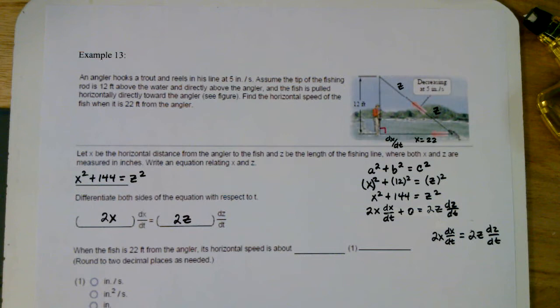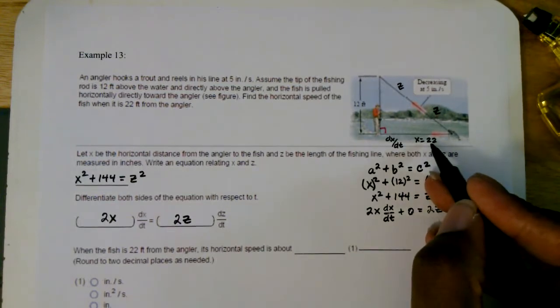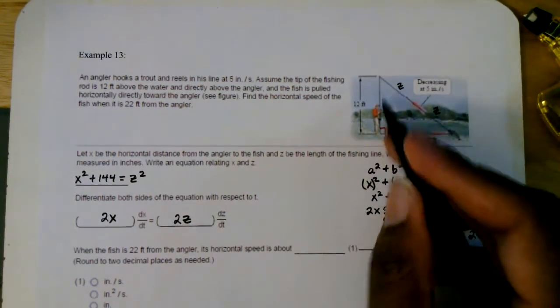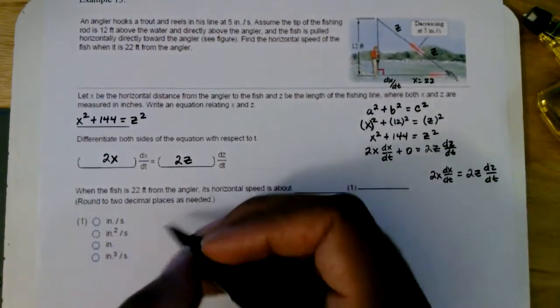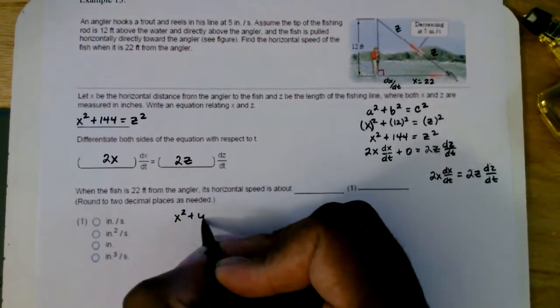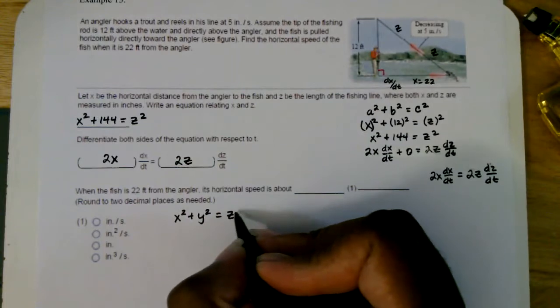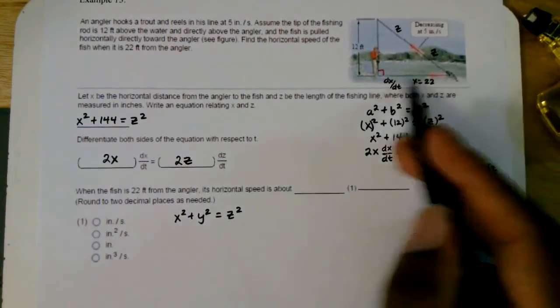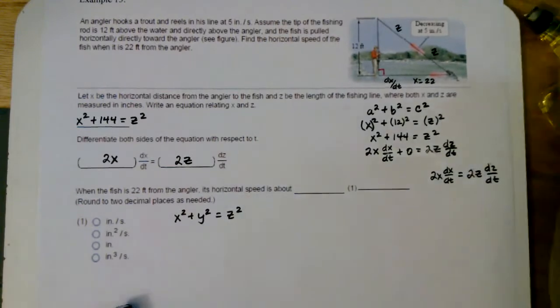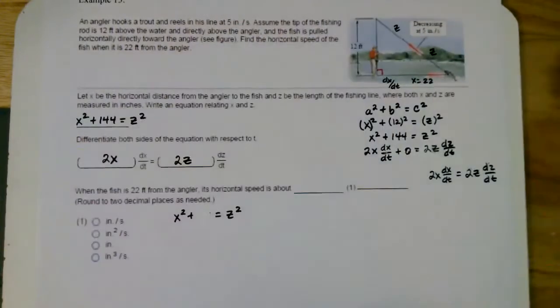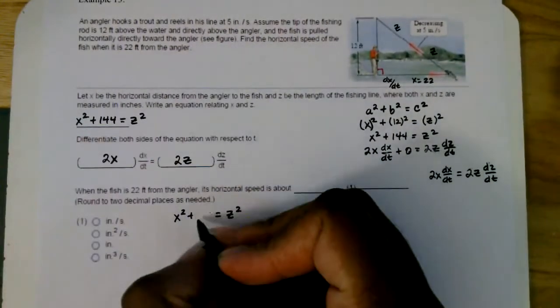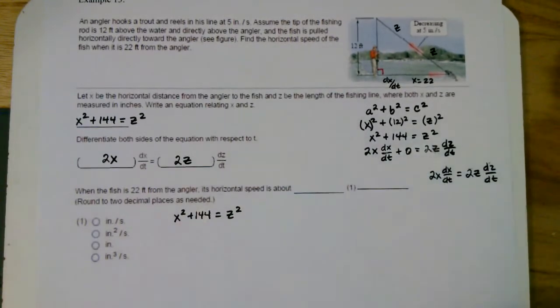Now, when the fish is 22 feet away from the angler, this is what x is. x is 22. We need to know what z is, using that Pythagorean relationship of the fact that x² + y² = z². And here that x is 22 feet. And that y², in fact, is this height right here. That's the 12 squared. That's 144. So I'm going to use x² + 144 = z². That way I can find out what z is.